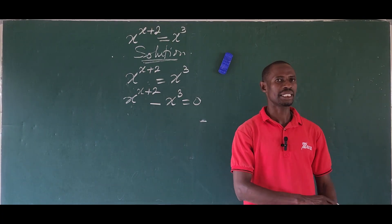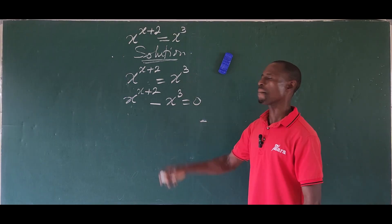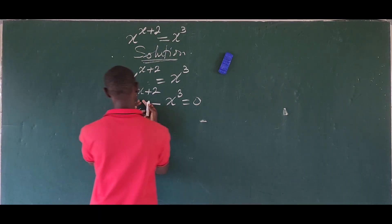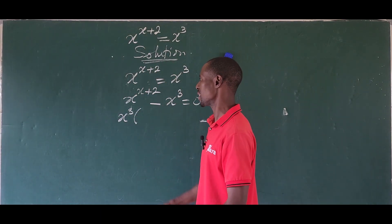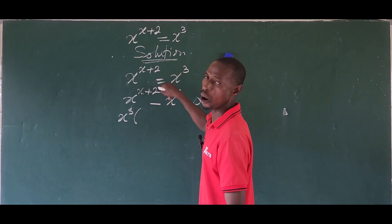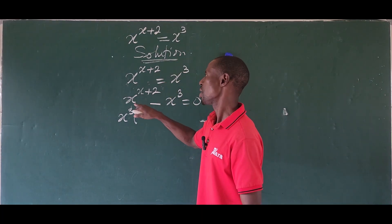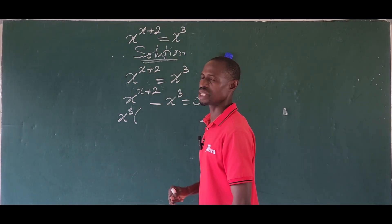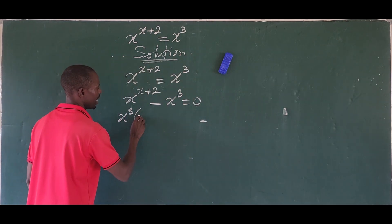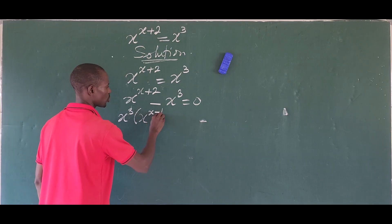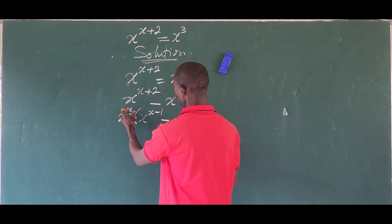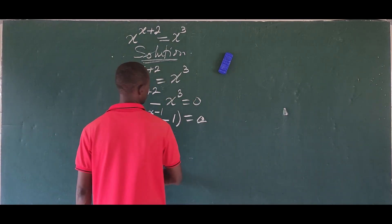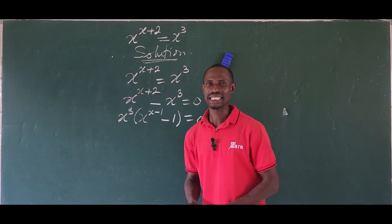The base alphabet here is x on both terms, so we're going to factor out x to the power of 3. Applying the law of indices, we divide through by x to the power of 3, bringing the power back as a subtraction: x plus 2 minus 3 gives us minus 1. So we get x to the power of 3, bracket x to the power of x minus 1, minus 1, close bracket, equals 0.